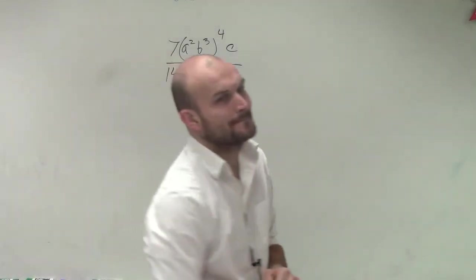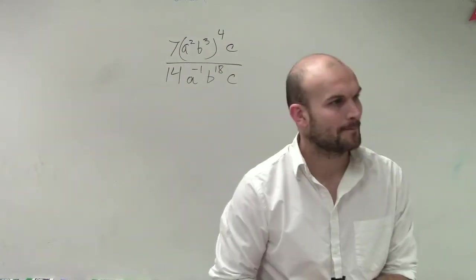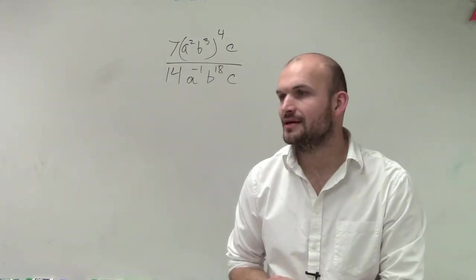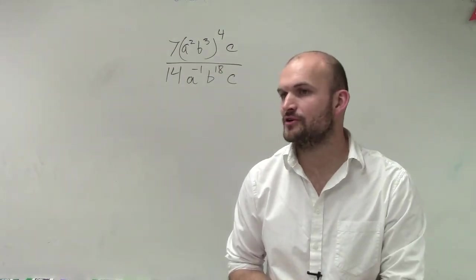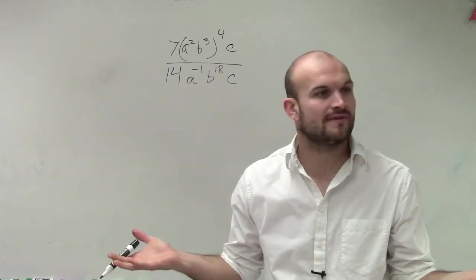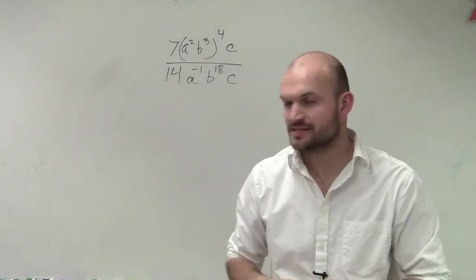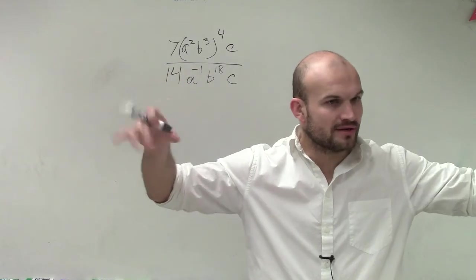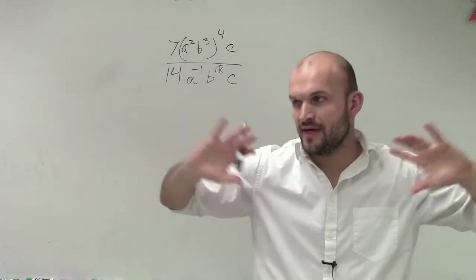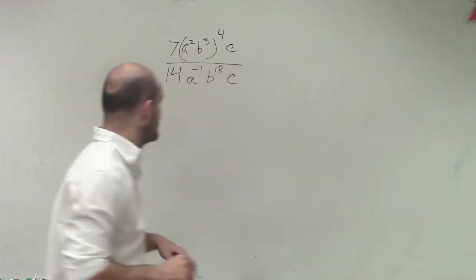OK, so what we're going to have here, let's just follow through the process. First thing is get rid of all the parentheses, right? Order of operations. So we get rid of all the parentheses, then simplify the numerator, simplify the denominator, and then use our laws and rules that we need to.